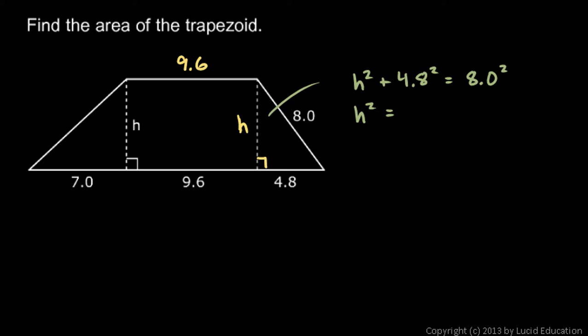and we get h² = 8² - 4.8². I've basically just taken that and rearranged it algebraically, and let's get some numbers in there. h² is 64 minus 4.8 squared, which is 23.04. So h squared works out to 40.96.